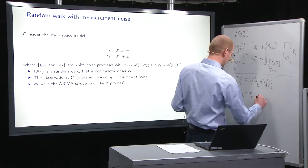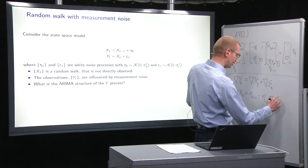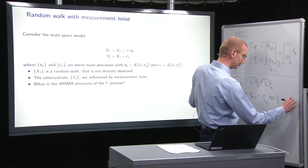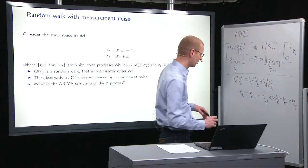So we have Xt equals Xt-1 plus, and then we use ηt here. This is the same as Xt minus Xt-1 equal to ηt, and this is indeed the same as ∇Xt.